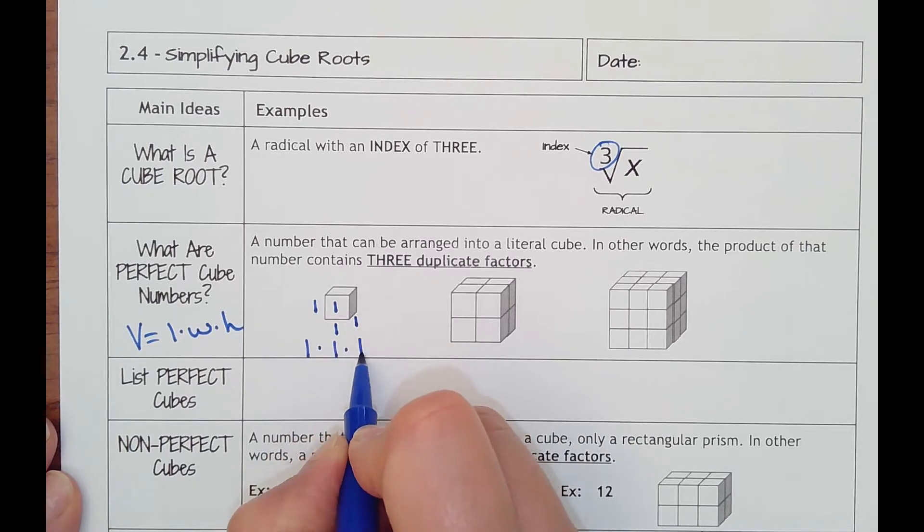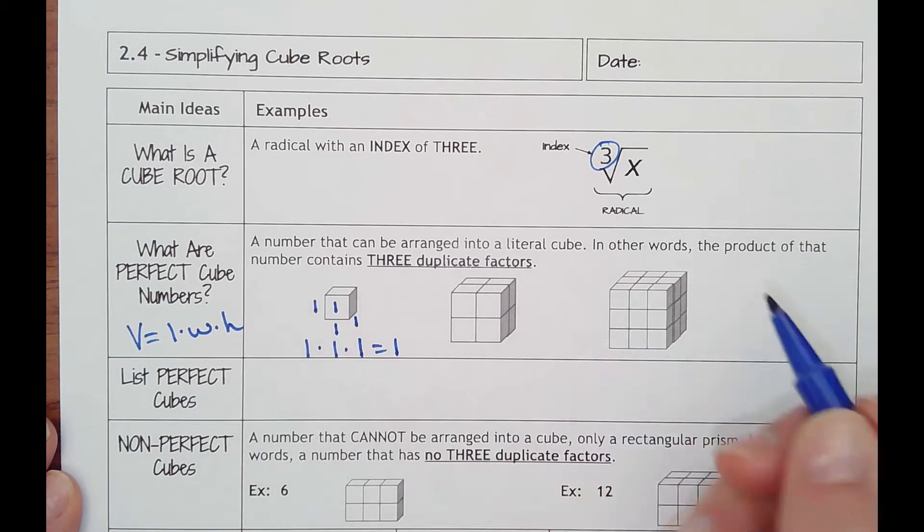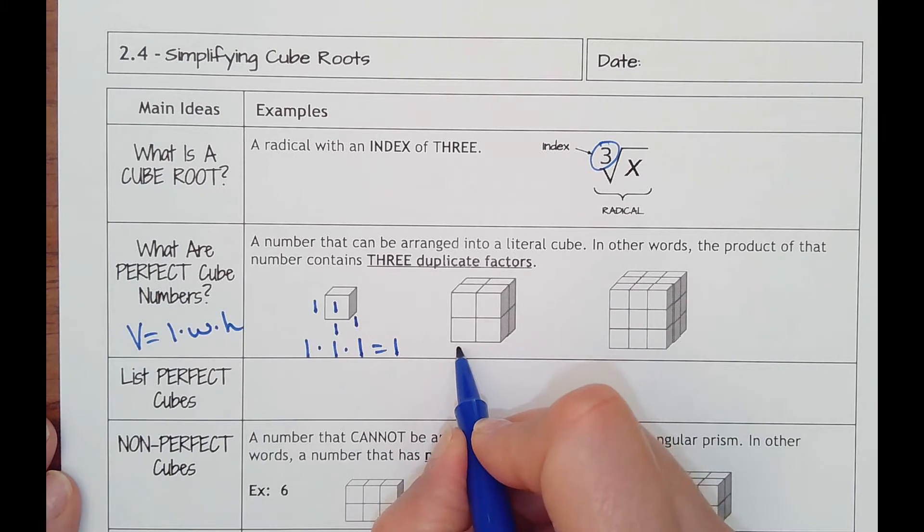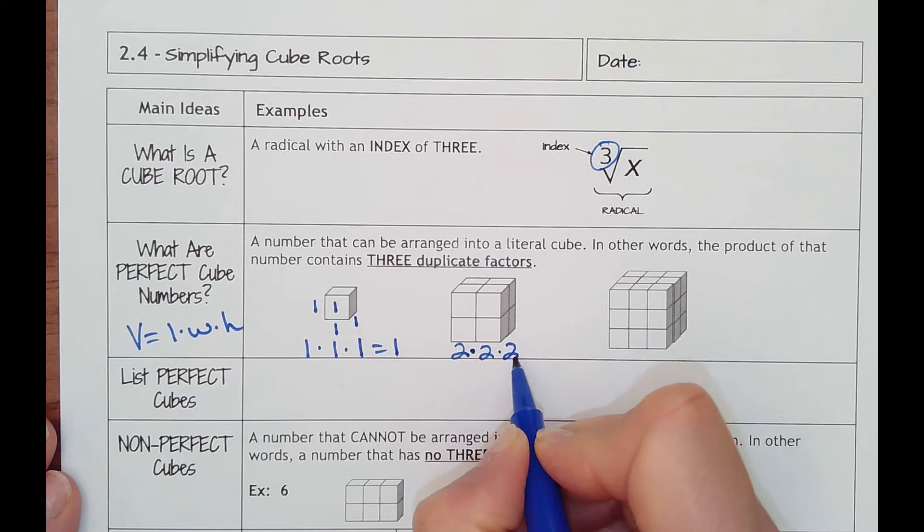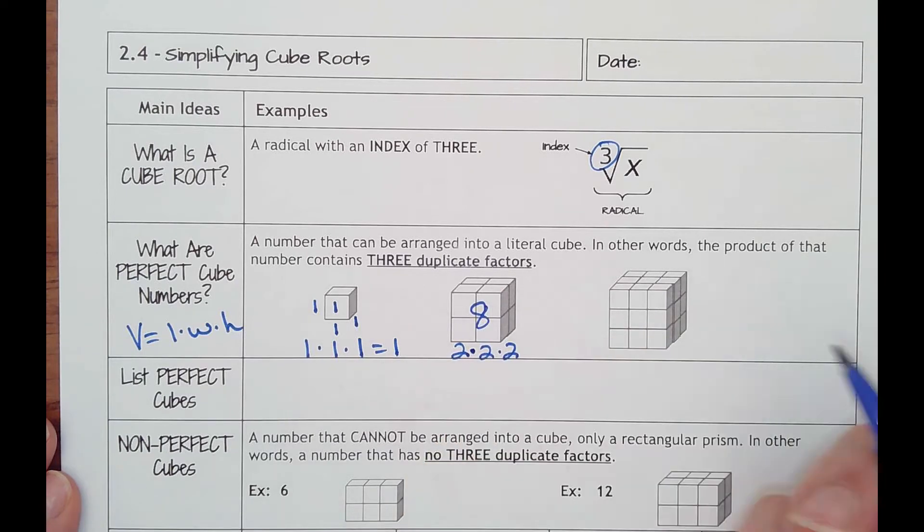So this is a one height, one width, maybe that's length one. One times one times one is one, so one is the first one. Then we have a two by two by two. Two times two is four times two is eight. There's eight cubes there.